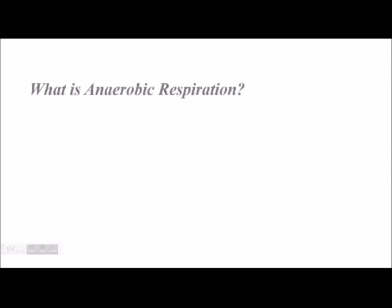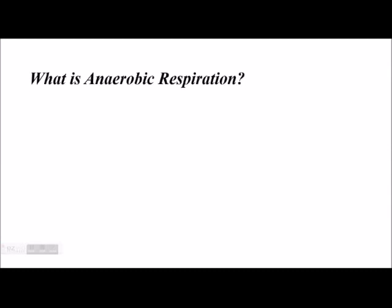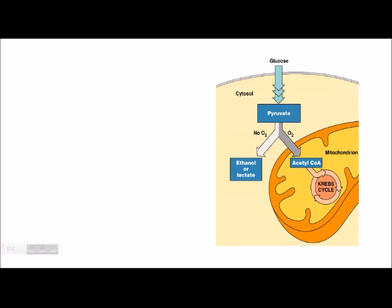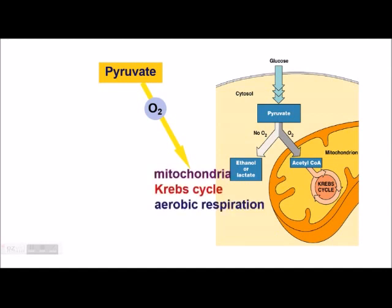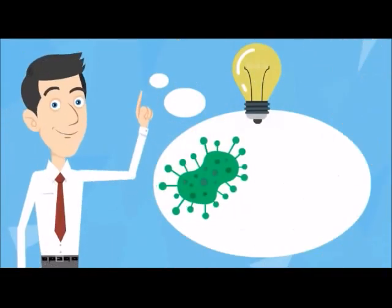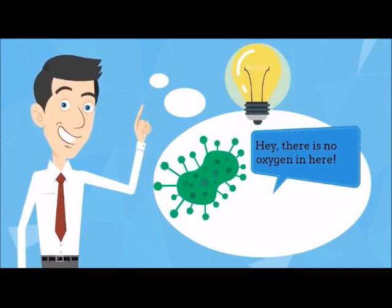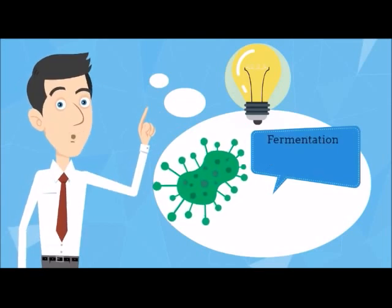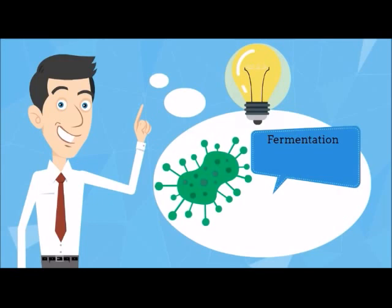What happens after glycolysis if there is no oxygen? Anaerobic respiration occurs — specifically, a process called fermentation. In glycolysis, pyruvate is created from glucose. Pyruvate is a branching point: in the presence of oxygen, the molecule goes to the mitochondria for the Krebs cycle. However, if oxygen is absent, fermentation occurs. When a cell needs to produce energy but oxygen is not available, fermentation provides energy without using oxygen. It is also called anaerobic respiration.